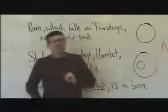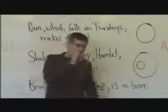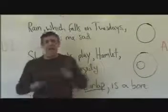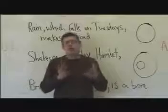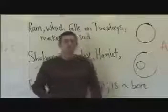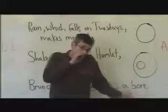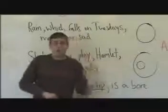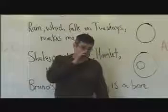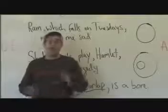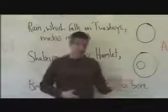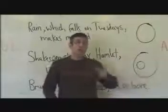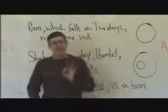How about this sentence, though? Rain which falls on Tuesdays, as opposed to rain which falls on Wednesdays, makes me sad. Which of those two sentences are you happier with? Rain, which by the way is that stuff that falls on Tuesdays, makes me sad — or rain which falls on Tuesdays, as opposed to rain which falls on Wednesdays, makes me sad? I hope it's the latter — that rain which falls on Tuesdays, as opposed to rain falling on other days, is the thing that makes you sad.